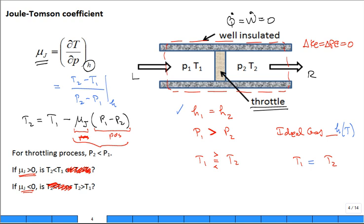If mu sub J is equal to zero, T2 is equal to T1. And that's for the case of an ideal gas.